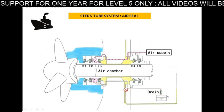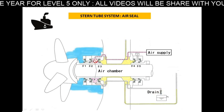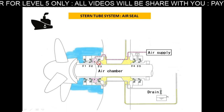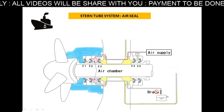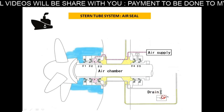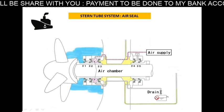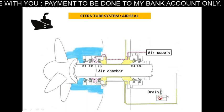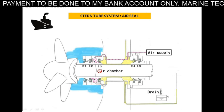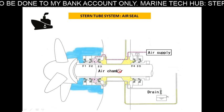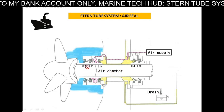If there is leakage of sea water or leakage of oil, it will collect in the drain tank. By monitoring this collection tank, we can know the condition of the stern tube system.